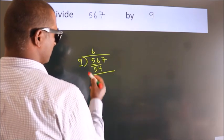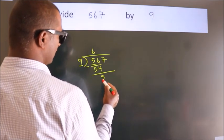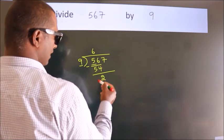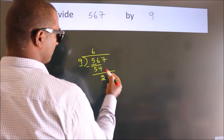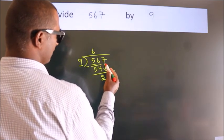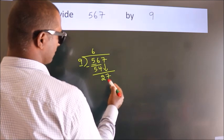Now, we should subtract. We get 2. After this, bring down the beside number. So, 7 down. So, 27.